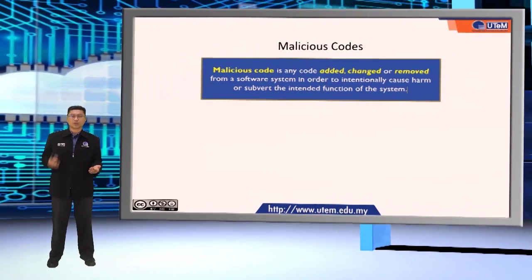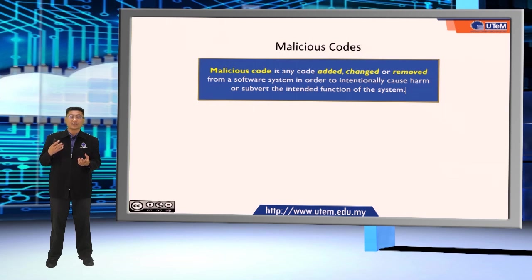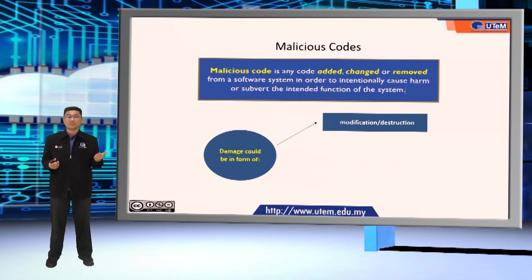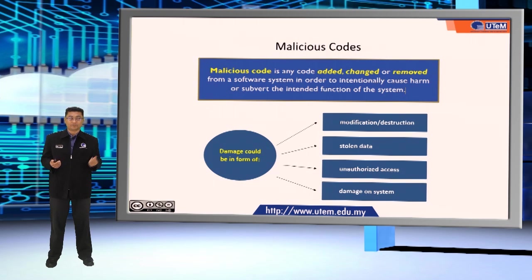So what is a malicious code? Malicious code or malicious program is a code added, changed, or removed from a software system in order to intentionally cause harm or subvert the intended function of the system. The damage could be in the form of modification or destruction, stolen data, unauthorized access, or damage on the system itself.